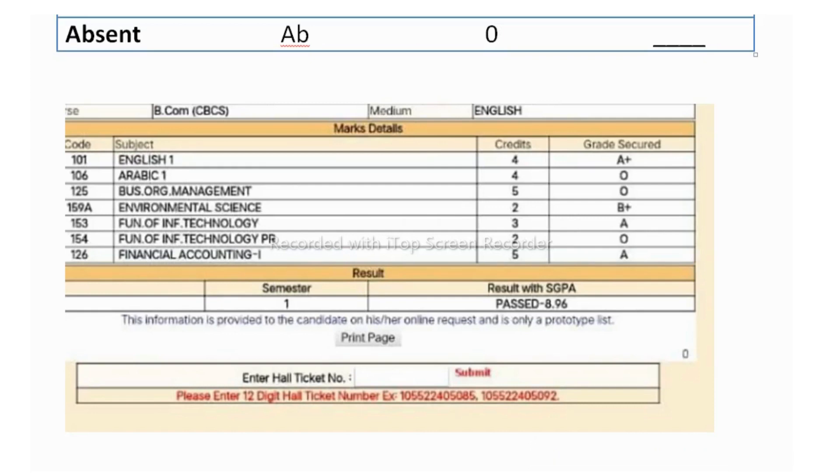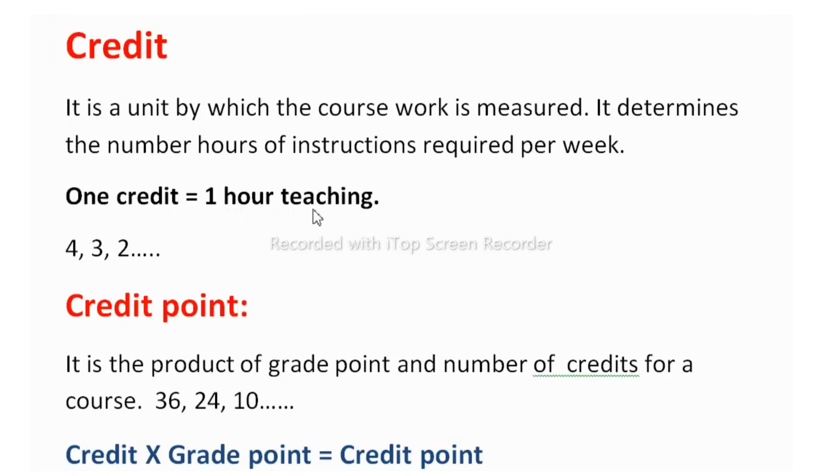So as you can see here, credit five is there. So whichever subject has more credit, its weightage is also more. So you have to score more in that subject. One credit equals to one hour of teaching per week.